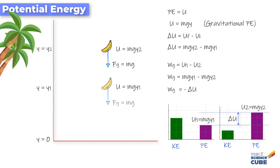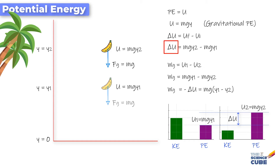Observe that ΔU is U_final − U_initial, so the negative of it is −ΔU. We can simplify further: Wg = mg·(y1 − y2). So the work done by the gravitational force is not simply the change in potential energy — which we normally write as final minus initial — but the negative of the change in potential energy. We will understand more about this formula by deriving it in the subsequent lesson.